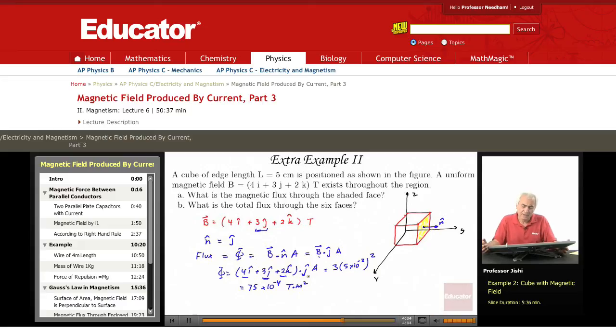This is the magnetic flux through the shaded face. So essentially what you do is you just look at the normal and take B dot n times the area, and that's the flux.